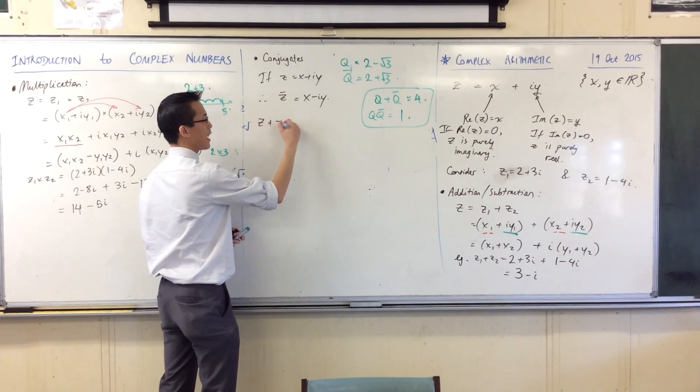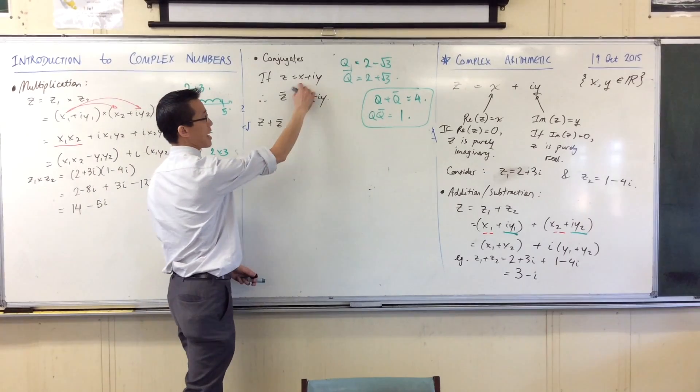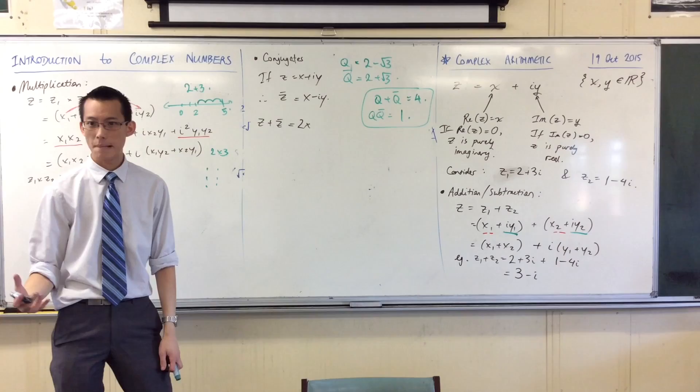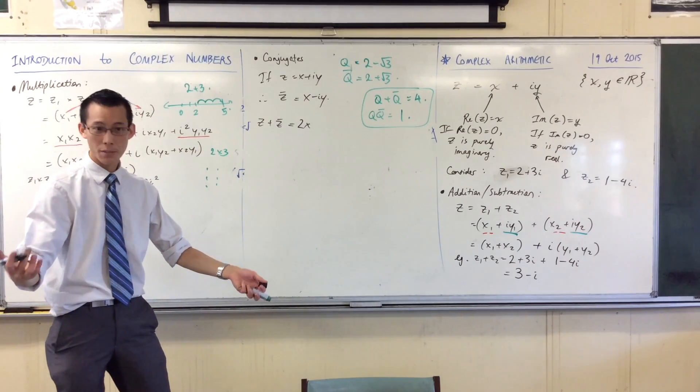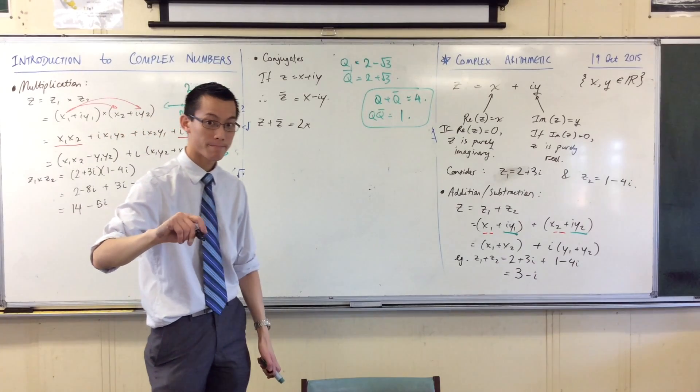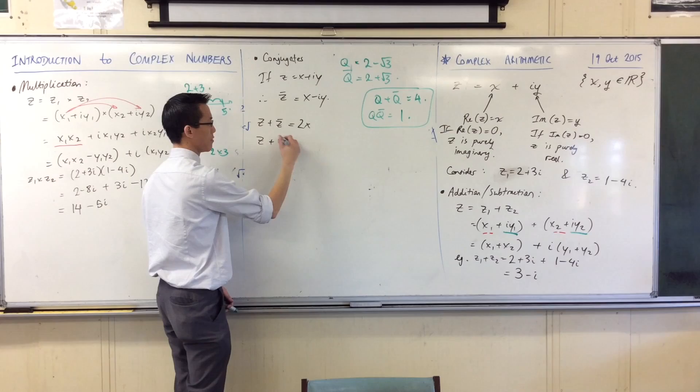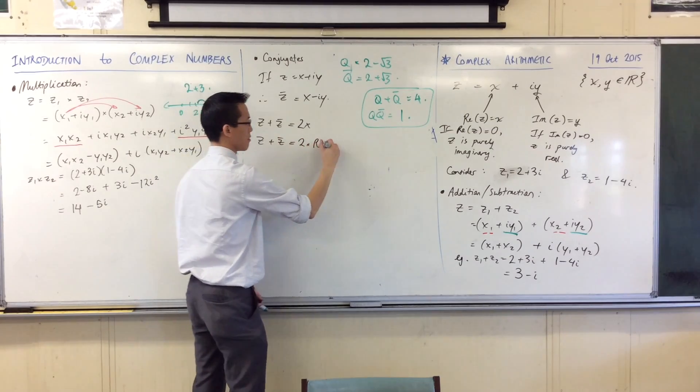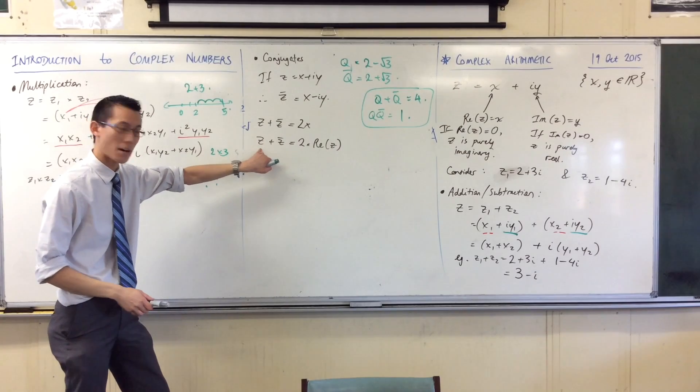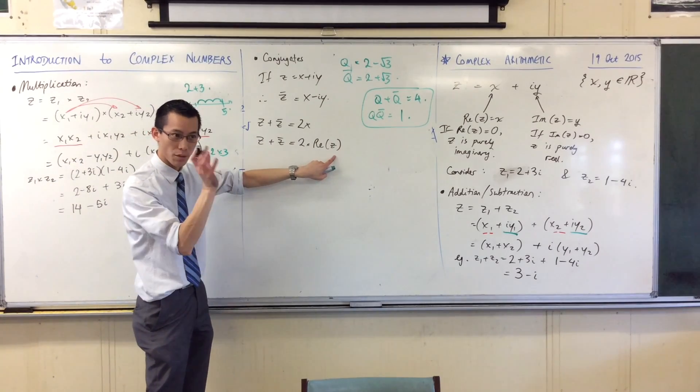Well, if you go z plus z-bar, you're going to get x plus x, which is 2x. What happens to the imaginary parts? They just disappear. Do you see that? Can we use the notation that we learned from before and say 2, re, z? Yeah, you can.